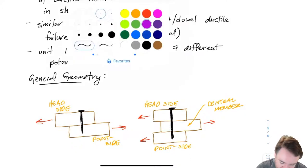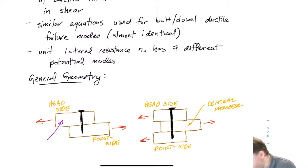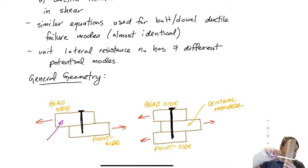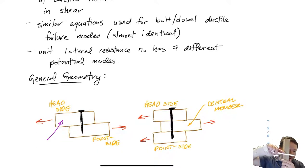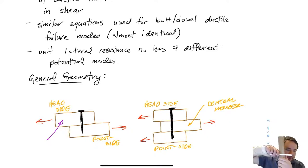Each of these members has a strength. The wood members each have an embedment strength, which is basically the resistance of the piece of wood to the nail pulling through it. As we shear the nail we're crushing the wood as it pulls through. That crushing strength — analogous to bearing strength in steel — is called the embedment strength.